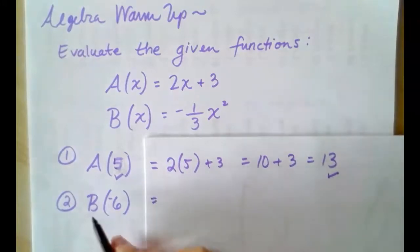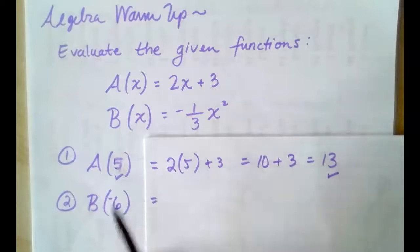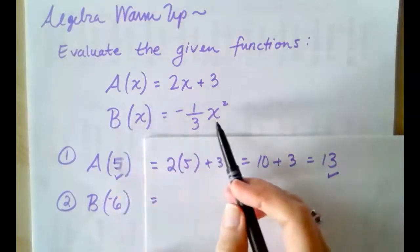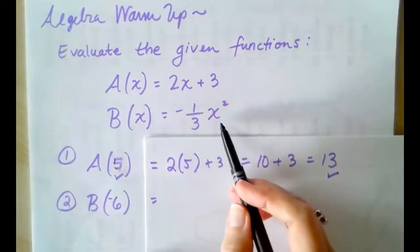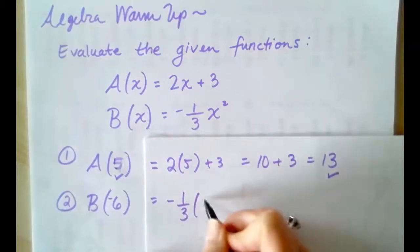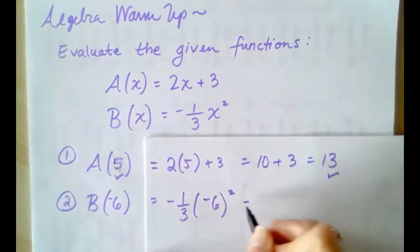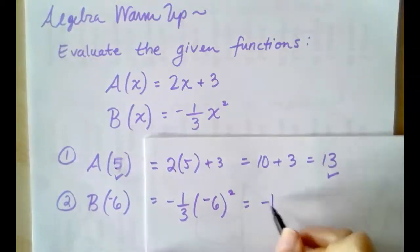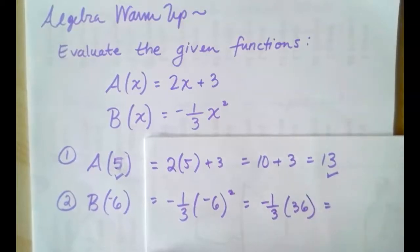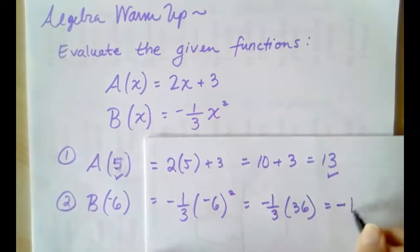Next, evaluate the B function when x equals negative 6. So, we're going to the B function, and we're going to plug in negative 6 as our input value. So, -1/3 times (-6)². Remember, we want to follow order of operations always. Square the negative 6, and then multiply by -1/3. -1/3 of 36 is -12.